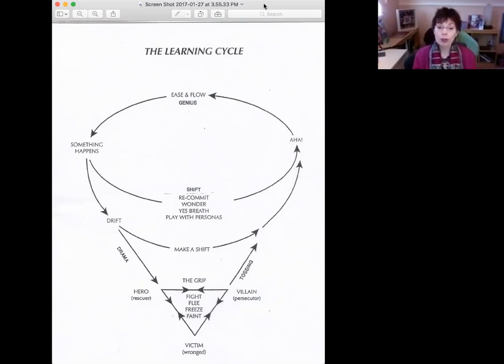So last piece of this. So what you'll notice is there's a shift when you recommit, when you do the wonder technique, yes breath, and play with personas. And that shift moves you into an aha, like, oh, now I get why I was doing that, and back into genius and flow. You know, Katie Hendricks says, it's a drift and shift world. And it is. And what we want to start doing is shifting before we go all the way into the grip of the triangle. But if you do go there, you can do these things that I talked about.